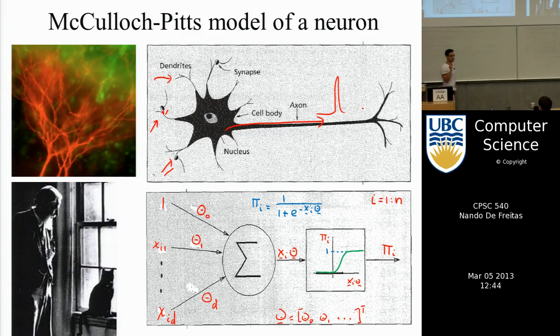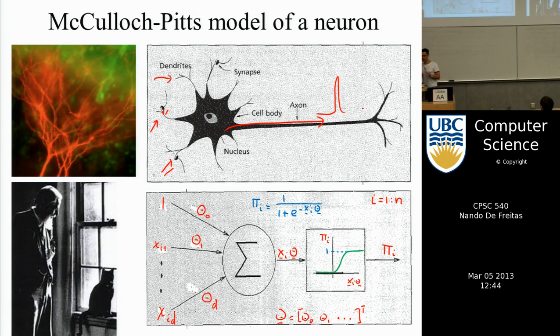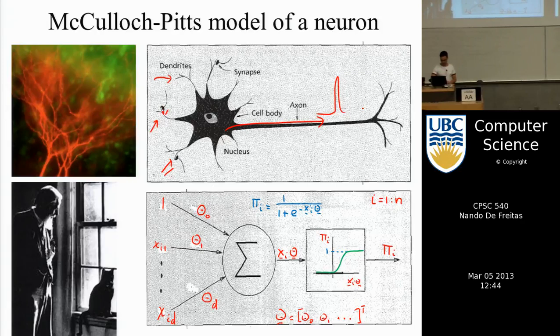This is a very simplified model of a neuron. There are neurons out there with 100,000 dendrites — they're extremely complex, and some researchers dedicate their lives to studying just one particular form of motor neuron. In this abstraction, the idea is you have d inputs. Let's start abstracting this mathematically.